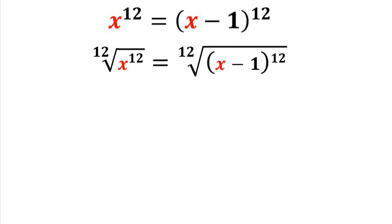The 12th root can also be rewritten as to the power of 1 over 12, but in this case we're going to write it like this. Now our powers and our roots are going to cancel. We're going to be left with x is equal to plus or minus x minus 1.